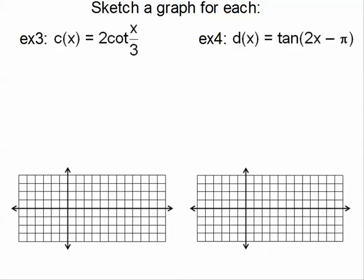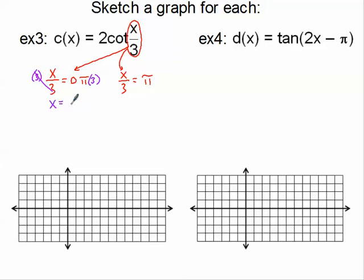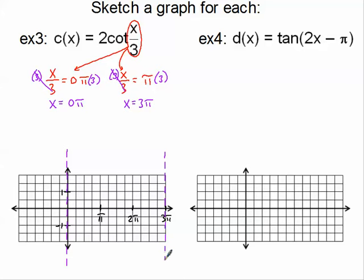We've got two more examples to look at. Example 3 is a cotangent. I take the quantity x divided by 3 and set it equal to 0 pi and also 1 pi — those are the original asymptotes for cotangent. Solving by multiplying by 3: x equals 0 on the first, and x equals 3 pi on the second. These are my two new vertical asymptotes, easy to find on normal labels — 1 pi, 2 pi, here's 3 pi. I'll mark up to 1 and down to negative 1 and dot in my new vertical asymptotes.